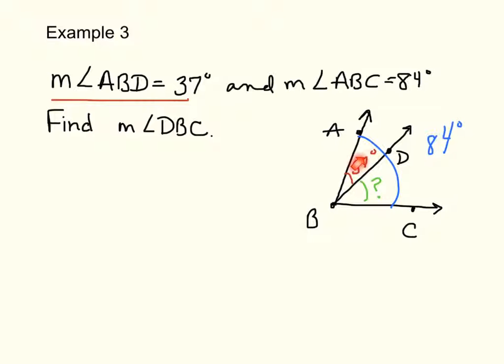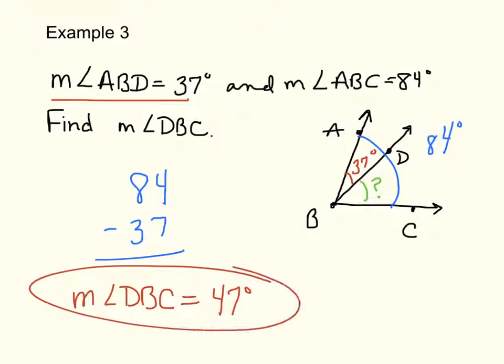Now, this is 37. This piece we don't know. The entire thing is 84. So what would you do? You'd subtract them. 84 minus 37. So we know the measure of angle DBC is equal to 47 degrees. Notice how I wrote that. Very specific. We're talking about measurement. So the measure of angle DBC is equal to 47 degrees. I just realized that this example here should be 2. So I'm going to cross that off and put 2.